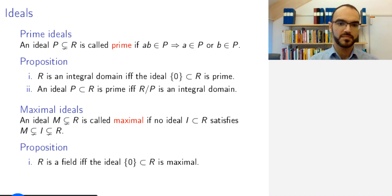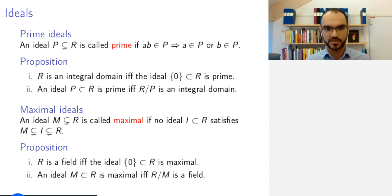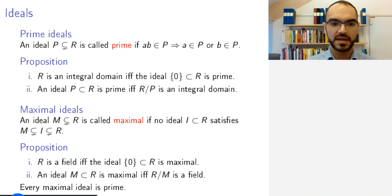We have a similar proposition. The zero ideal being maximal corresponds to the fact that R is a field. What does it mean that the zero ideal is maximal? It simply means there are no ideals except for the zero ideal and the ring itself, and that is one of the characteristic properties of a field. Arguing just as above, you can generalize this to saying that if you have a ring, then an ideal in that ring is maximal if and only if the quotient by this ideal is a field. So in particular every maximal ideal is a prime ideal.